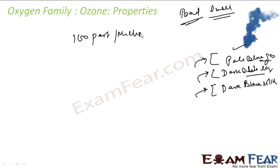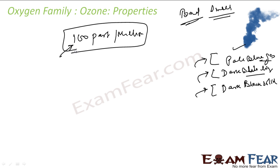Ozone is harmful if taken at a concentration of more than 100 parts per million. If ozone is not present, the UV rays from the Sun will harm you. So you need ozone, but only in small quantities. If the amount of ozone exceeds more than 100 parts per million, breathing becomes uncomfortable and you may feel nausea and headache.